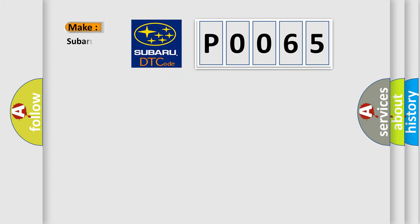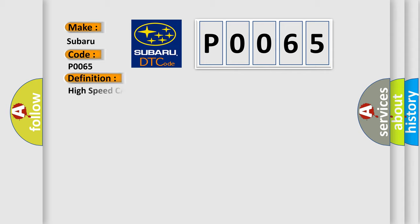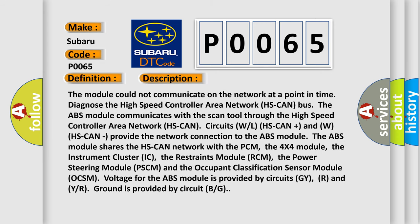What does the diagnostic trouble code P0065 interpret specifically for Subaru car manufacturers? The basic definition is: High Speed CAN Communication Bus. The module could not communicate on the network at a point in time. Diagnose the high speed controller area network, HS CAN bus. The ABS module communicates with the scan tool through the high speed controller area network HS CAN circuits.